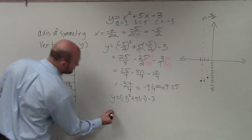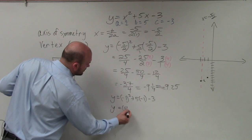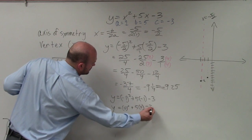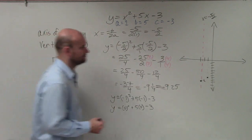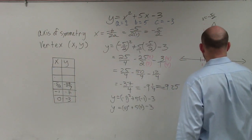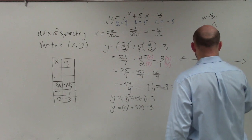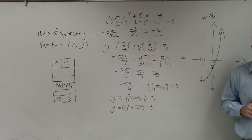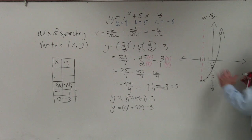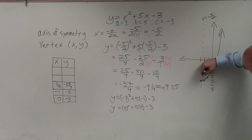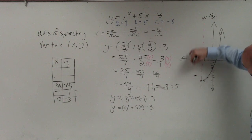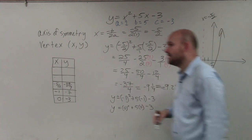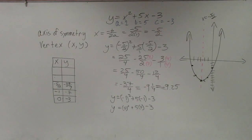And then at 0, I just plug in 0, and you can see we get negative 3. So ladies and gentlemen, we have half of our graph. And now what we do is we take this graph and we reflect it over the axis of symmetry. So you guys can see now I have my graph.